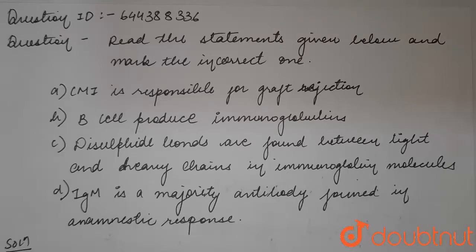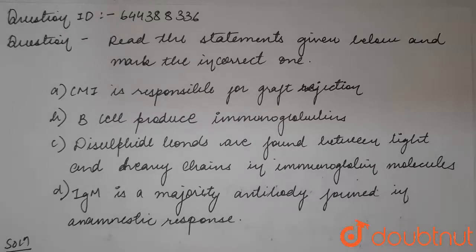A: CMI is responsible for graft rejection. B: B cells produce immunoglobins. C: Disulfide bonds are found between light and heavy chains in immunoglobulin molecules. D: IgM is a majority antibody formed in anamnestic response.